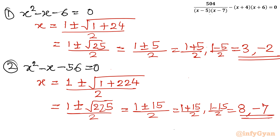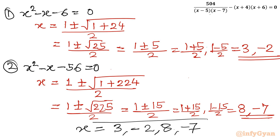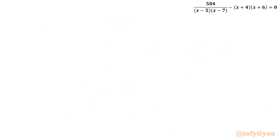So far we have calculated 4 solutions. The complete solution set is 3, −2, 8, and −7. Now I will verify all 4 to check whether there are any extraneous solutions or not. Let's verify.